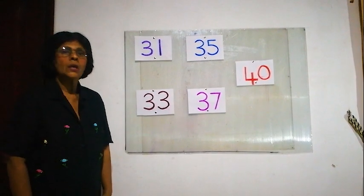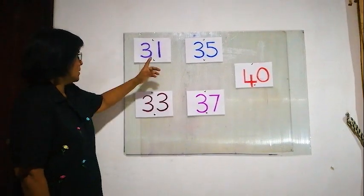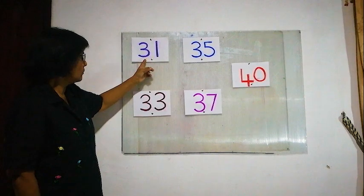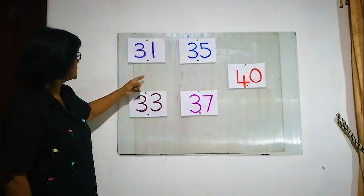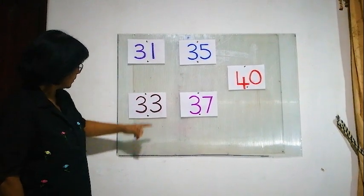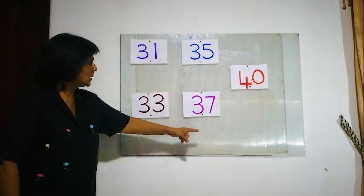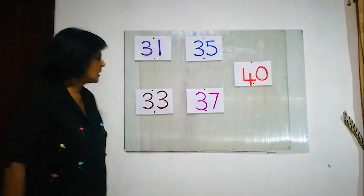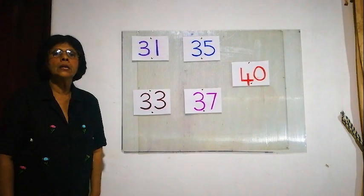Hello children. Today we are going to learn finding the missing number from 31 to 40. There are some numbers missing here, another one here, another one here, and another one here. So what we must do, we have to find the missing numbers.